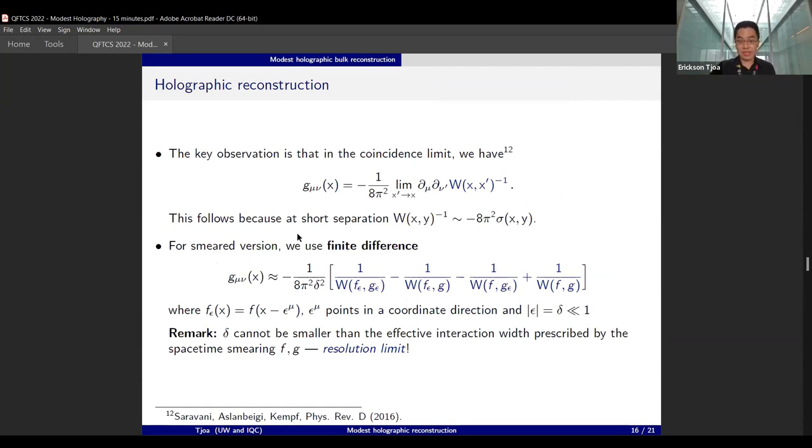The key observation by Saravani, Aslanbeigi, and Kempf in 2006 is that the metric can be obtained just from this kernel function—kernel distribution—by taking two derivatives at two different points and then taking the coincidence limit. Of course, you take the reciprocal. This is because the leading behavior is governed by the Synge world function and this thing knows the metric.